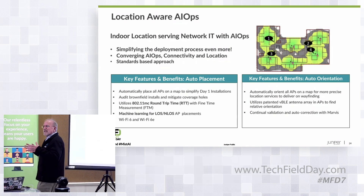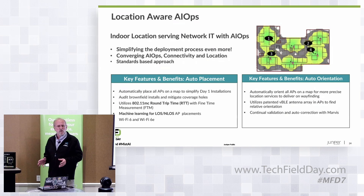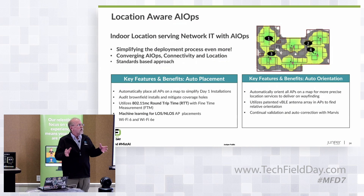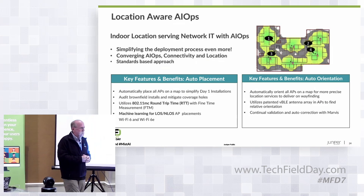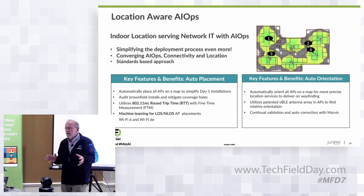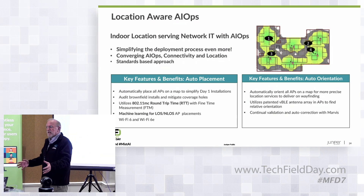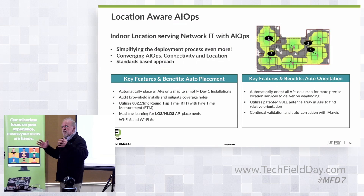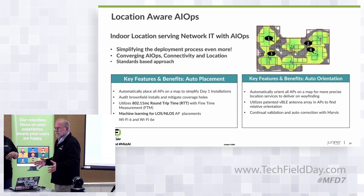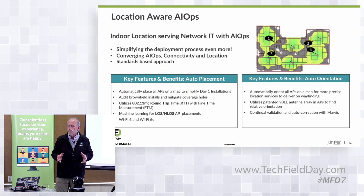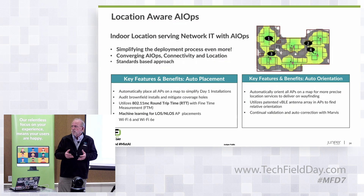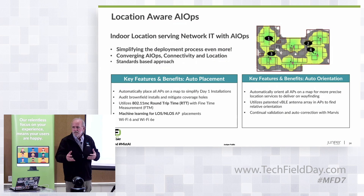It's important for things like coverage. We want Marvis to be aware of what happens when people start to move their access points. What we're announcing today is really the beginnings of identifying AP location, and this brings two pieces into the Marvis adventure. One of the problems we have with location is getting the whole deployment process easier.